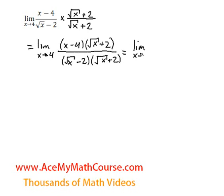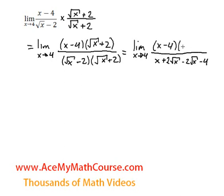So that's just the limit as x approaches 4. Once I expand the bottom, the square root of x times the square root of x is the square root of x squared, which is just x. And minus 2 times the square root of x is just minus 2 square root of x. And minus 2 times 2 is just minus 4. Up top, I'm just going to leave this the way it was — square root of x plus 2 over here.